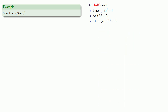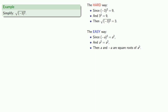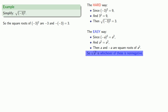The reason this is the hard way is that we first have to find negative 3 squared, and then determine that 3 squared equals the same thing. The easy way stems from the following observation: since negative a squared is equal to a squared, and a squared is equal to a squared, then a and negative a are both square roots of a squared. That means the principal square root of a squared is whichever of these is non-negative. So the square roots of negative 3 squared are negative 3 and negative negative 3 — otherwise known as 3 — and the principal square root is whichever is non-negative, which must be 3.